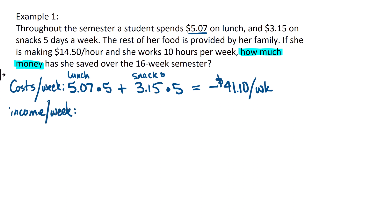Now let's look at the income per week. We know that she works for fourteen fifty per hour and she works ten hours per week. So fourteen fifty times ten gives you the weekly amount she's making — a hundred and forty-five dollars per week.